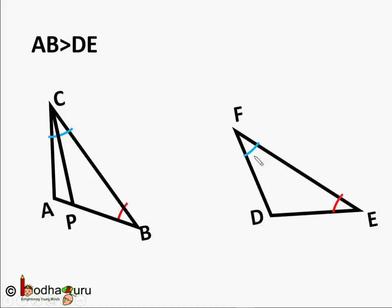Now, in triangle PBC and DEF, PB equal to DE. We just thought it that way. Angle B is equal to angle E and BC equal to EF that was given.